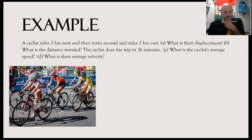So here's an example. We have a cyclist riding three kilometers west, turns around and goes two kilometers east. Question is, what is their displacement? And then what is the distance traveled? If they do this trip in 16 minutes, what is the cyclist's average speed? And then what is their average velocity?